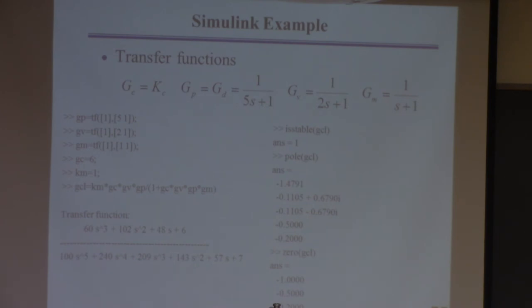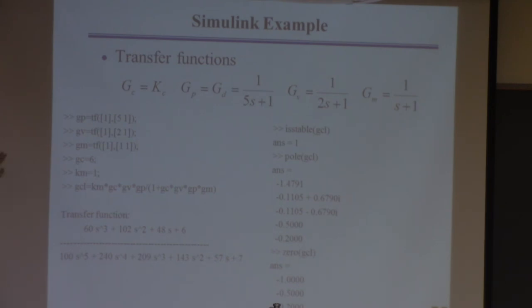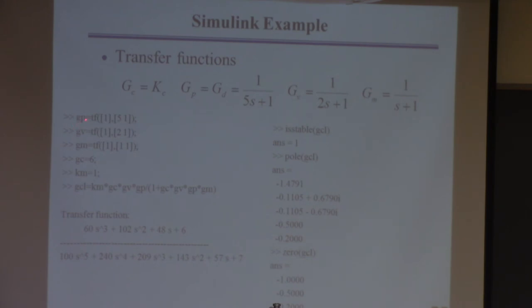Now I'll show how to do this quickly in MATLAB. This is the same first motivating example: proportional controller, first-order process, first-order valve, first-order measurement device. In MATLAB I form all these transfer functions — GP is one over (5s + 1), the valve transfer function, GM the measurement transfer function. I specify the proportional controller gain as 6, and KM as the DC gain of the measurement device (which is 1 here). Then I form the closed-loop transfer function using the standard feedback formula.